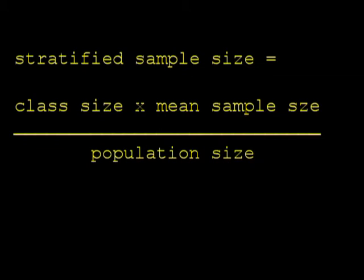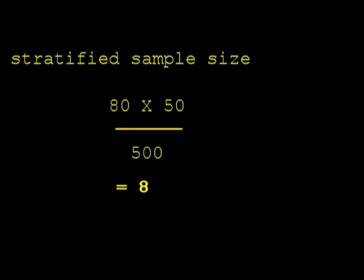So, for year 1, we take 8 individuals and not 10. Doing this for all the years, we get the table as shown.